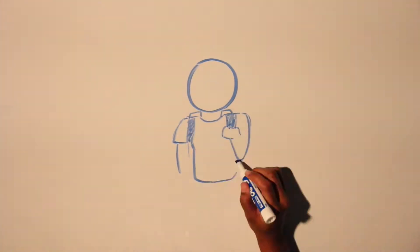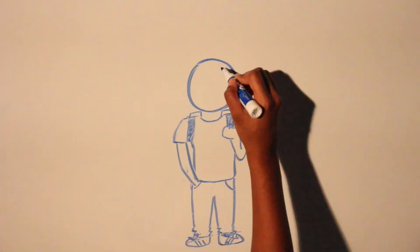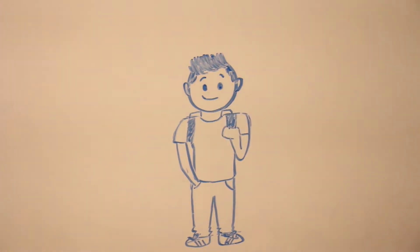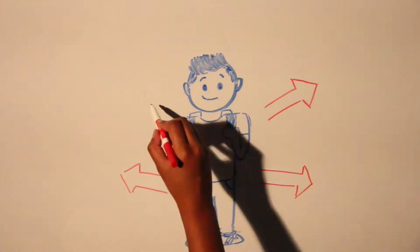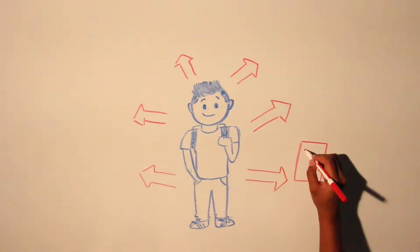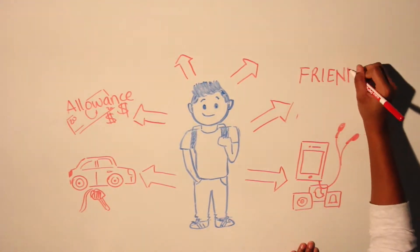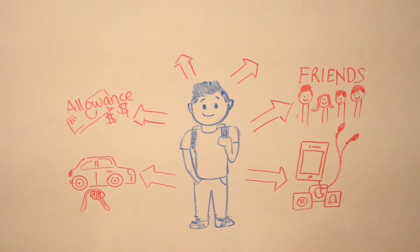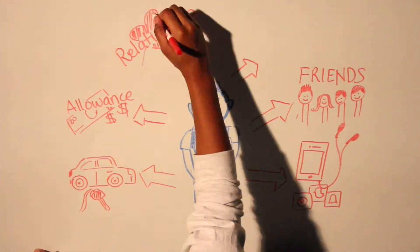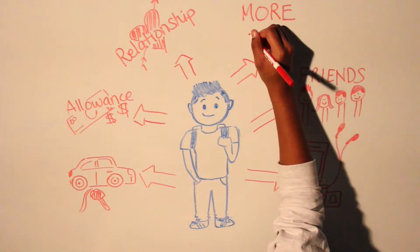Entering our teenage years, things dramatically change. We suddenly find ourselves immersed in technology, also maneuvering the dangerous road, handling money, and finding both our first friends and our first love.